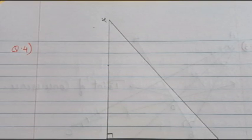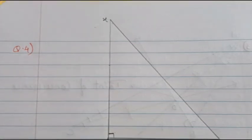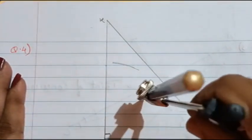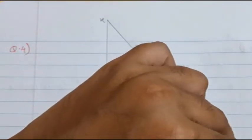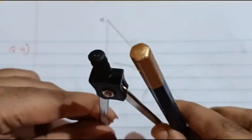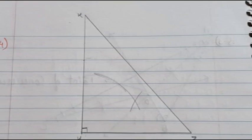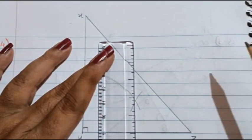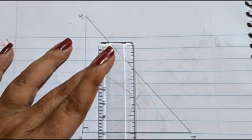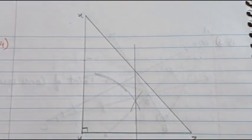Now let us bisect the sides. For the angle bisector we used to take the distance less than half, but here for perpendicular bisectors we take the distance more than half. I will do one arc above and one arc below from each end of the side. From Z again I will take one arc above and one below. Now I have got two arcs and I will draw a line passing through them. I have drawn the line — this bisects side YZ.